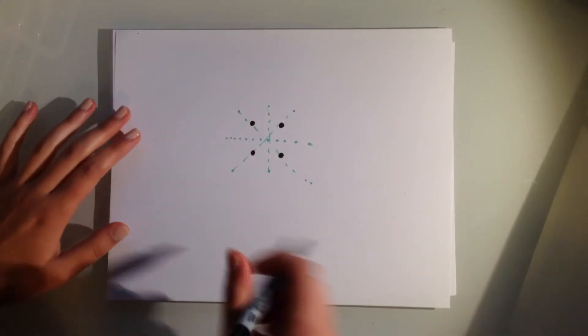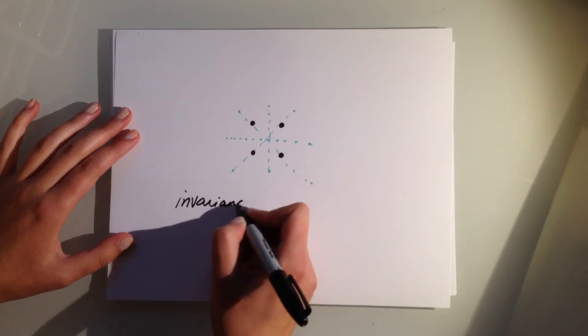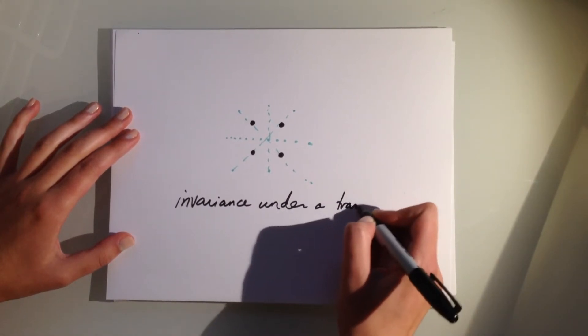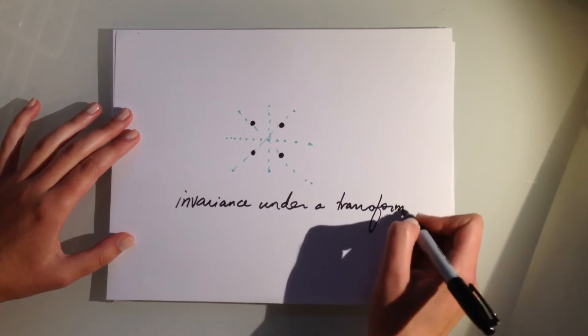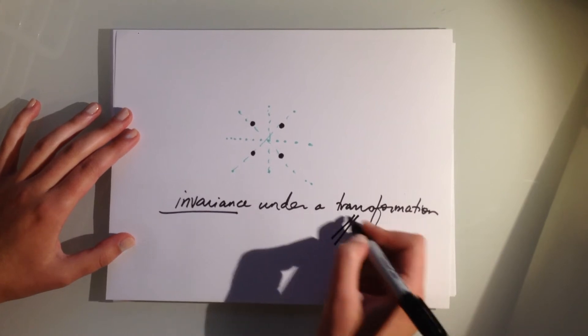Brace yourself for some science words. A symmetry is therefore an invariance under a transformation. But really, all this means is that something looks the same, is invariant, when we do something to it - a transformation.